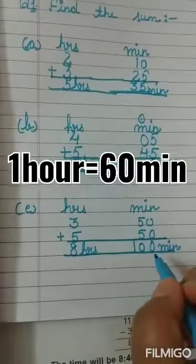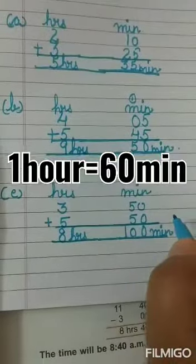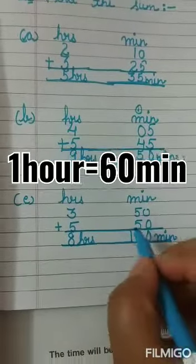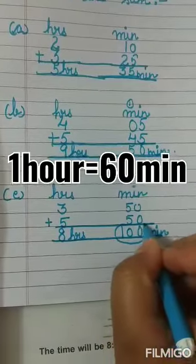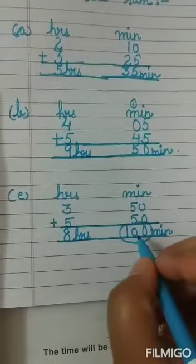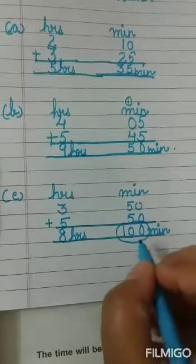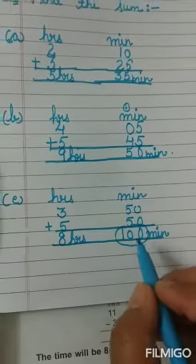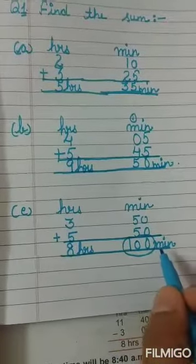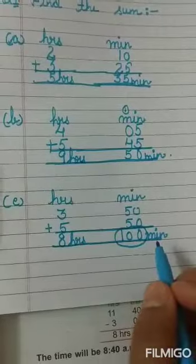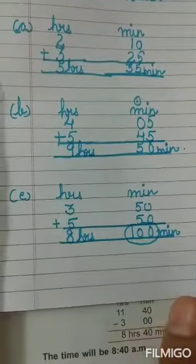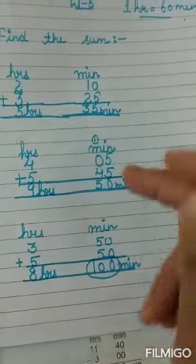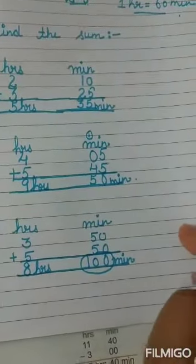यह आए आपके पास 8 hours और 100 minutes। अब हमें पता है 60 minutes means 1 hour, तो यह 60 से ज़्यादा हो गया है। तो यहां पे आपने ध्यान देना है: जब minutes 60 या more than 60 हो जाए, तो आपने उन minutes को encircle कर लेना है। मैंने यहां encircle कर लिया है, because 100 minutes are more than 60। 60 से ज़्यादा है, तो इसे हम hours में convert कर सकते हैं।